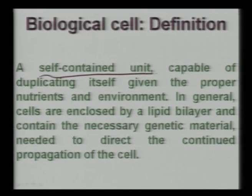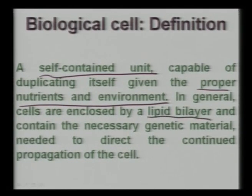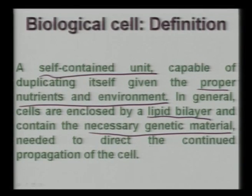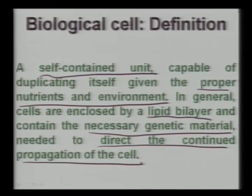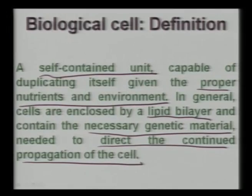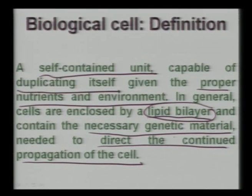A biological cell is a self-contained unit capable of duplicating itself given proper nutrients and environment. Cells are enclosed by a lipid bilayer membrane containing necessary genetic material enclosed in the nucleus — DNA and RNA. This genetic material directs continued propagation of the cell through the cell cycle: differentiation, death (necrosis), and so on. The entire cell cycle is governed by how this genetic material performs.